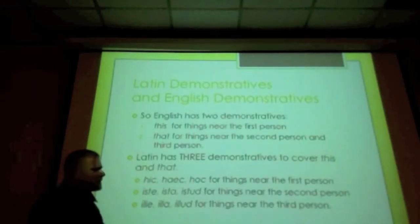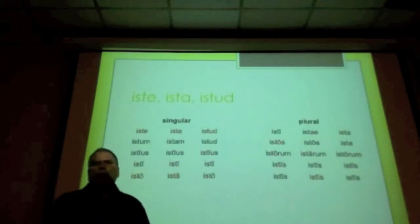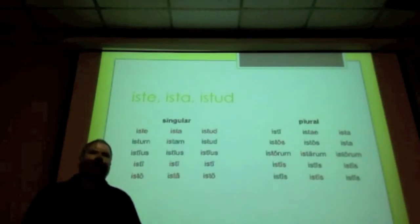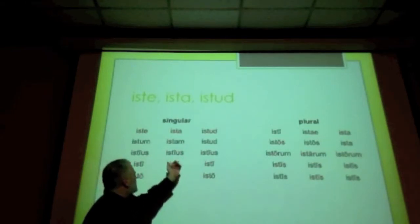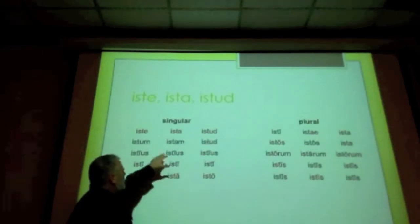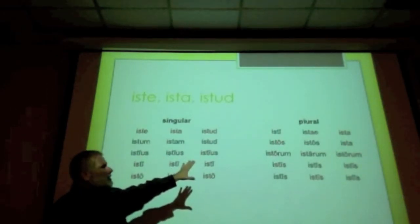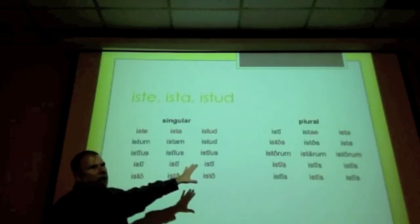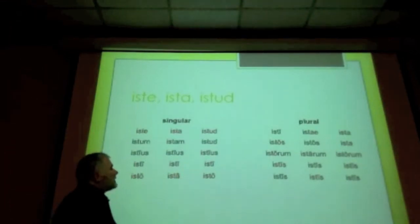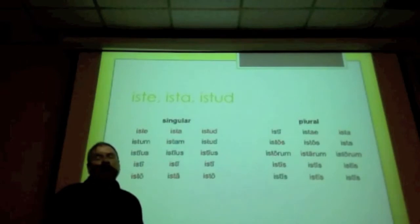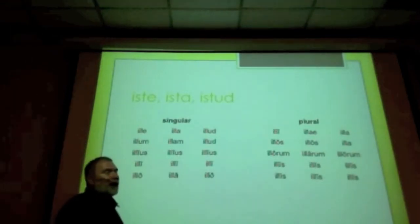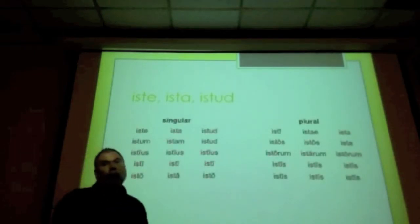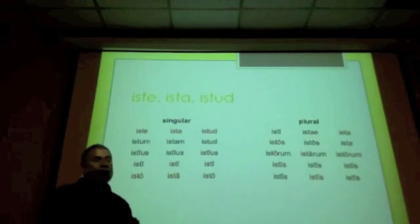Let me talk about iste/ista/istud. We have not yet learned this demonstrative, but it's very simple — it declines exactly like ille/illa/illud. Here is iste/ista/istud declined: iste, ista, istud; istius, istius, istius; isti, isti, isti; isto, isto, isto. The singular endings are a little irregular, but the plural is easy — just like a standard first and second declension adjective, like multus/multa/multum. If you compare these endings with ille, they are the same. The only difference is that ille begins I-L-L and iste begins I-S-T. Your book won't be introducing iste for some weeks, but it will eventually introduce this important demonstrative.